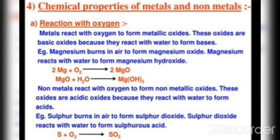Nonmetal oxides are said to be acidic oxides. For example, sulfur burns in air to form sulfur dioxide, and sulfur dioxide reacts with water to form sulfurous acid. The reaction is: S + O₂ → SO₂. This is how metals and nonmetals react with oxygen.